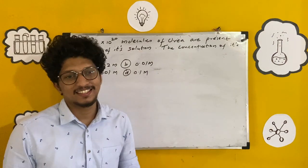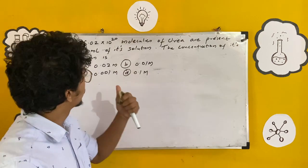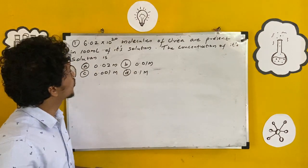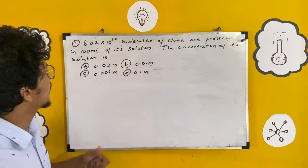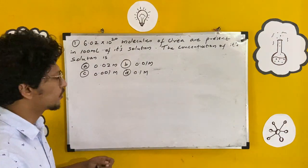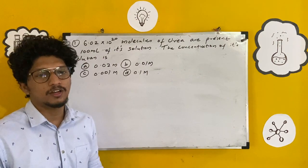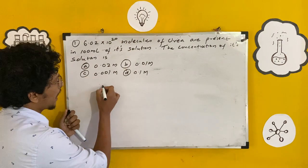Good morning, my name is Ramiz. Today we are going to discuss some questions. First question: 6.02 × 10²⁰ molecules of urea are present in 100 mL of its solution. The concentration of this solution is what we have to calculate here. As it is given, 6.02 × 10²⁰ molecules...